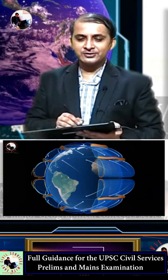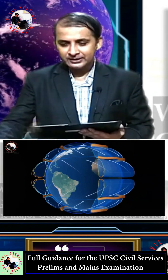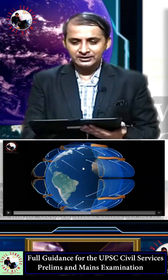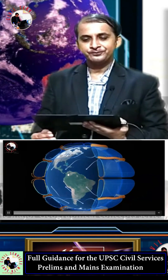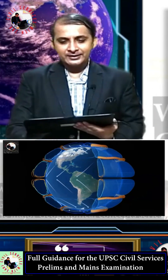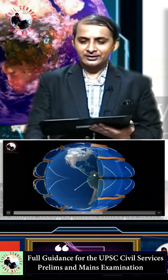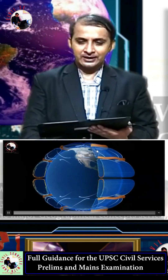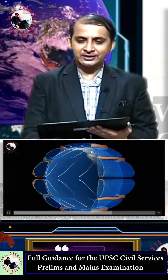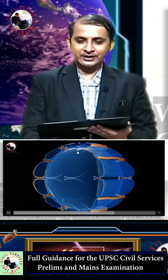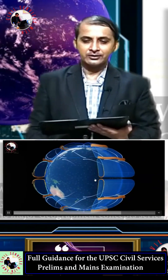See the animation. These are Rossby waves and these are jet streams. This is our easterly wind, and this is the westerly wind. These are the three cells.